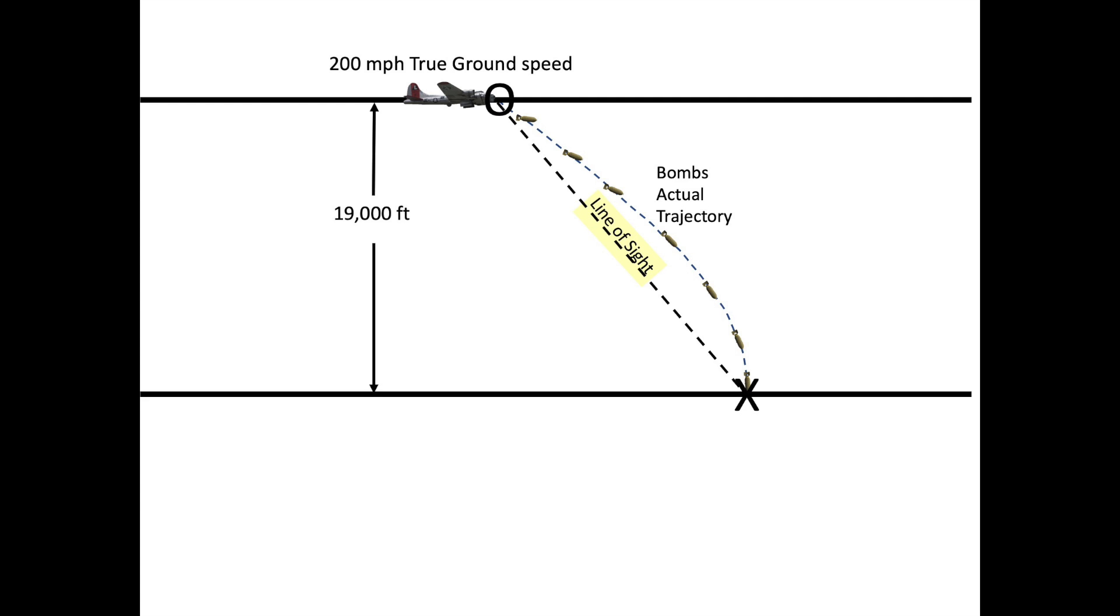The ground distance from bomb release point O and the bomb contact location X is the actual range. The angle formed between the vertical altitude line and the line of sight is the dropping angle. The dropping angle is the most important value.